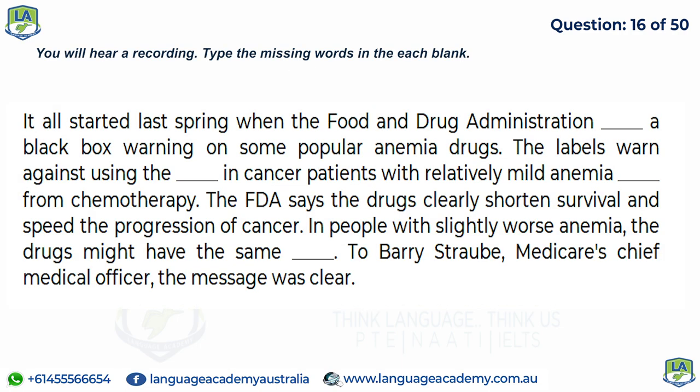It all started last spring when the Food and Drug Administration placed a black box warning on some popular anemia drugs. The labels warn against using the drugs in cancer patients with relatively mild anemia resulting from chemotherapy. The FDA says the drugs clearly shorten survival and speed the progression of cancer. In people with slightly worse anemia, the drugs might have the same effects — a message that was clear to Barry Straub, Medicare's chief medical officer.